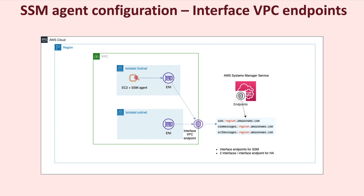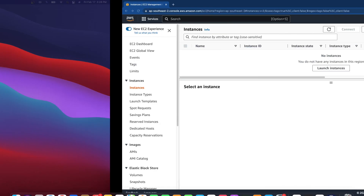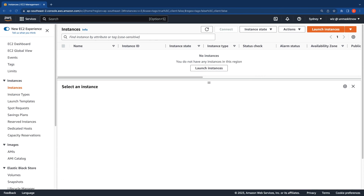For configuring SSM, you do not need to allow any inbound rules on the EC2 instance security group. However, the interface created for the endpoints will need to be attached with a security group that allows TCP port 443 from that instance. Let's switch over to the AWS console.